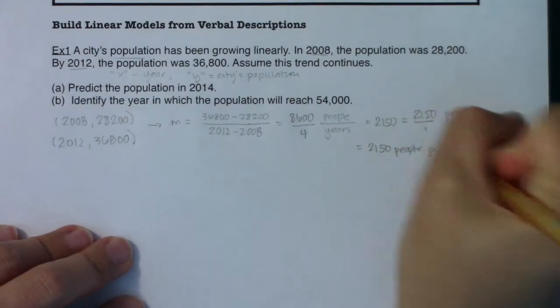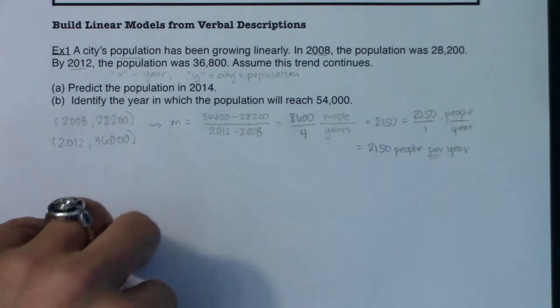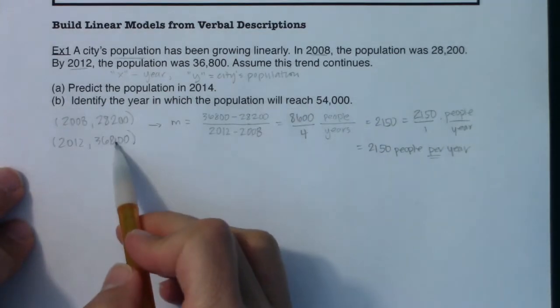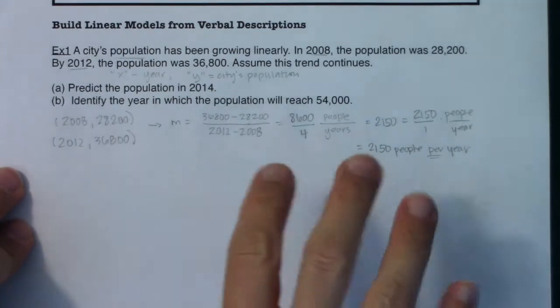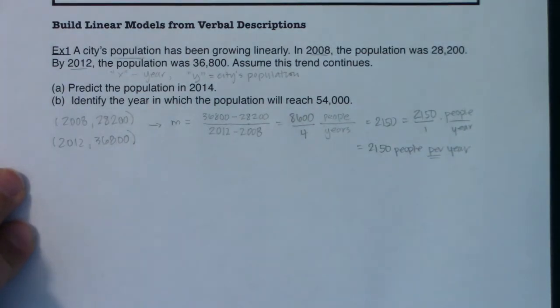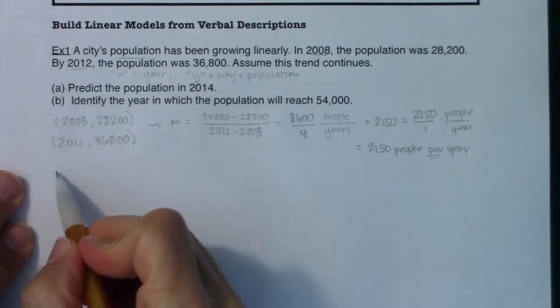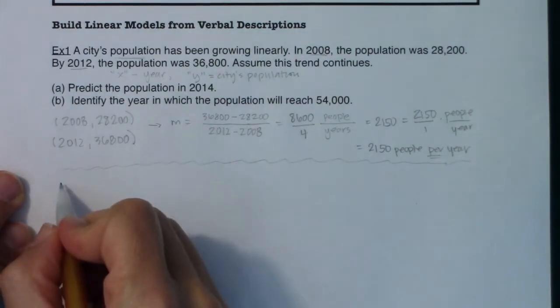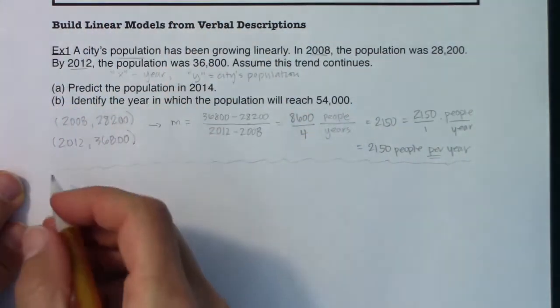And I won't say that it's exactly 2,150 per year. I don't know if one year was better than the other, but I know on average, over the course of the 4 years, it averaged out to about 2,150 people per year. So let's just interpret that a little bit. So 2,150 people per year. And again, anytime you hear the word per, we're talking about a slope, some kind of rate of change. So I've identified the slope. The next thing I need to do is get my linear model. Now, I have a slope and I have 2 points. So I could use the slope-intercept form of the line, but I'm going to just use the point-slope form of the line.